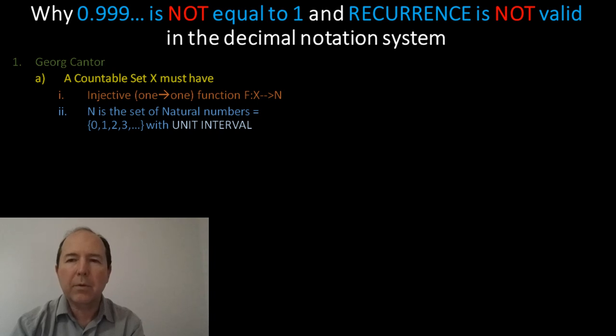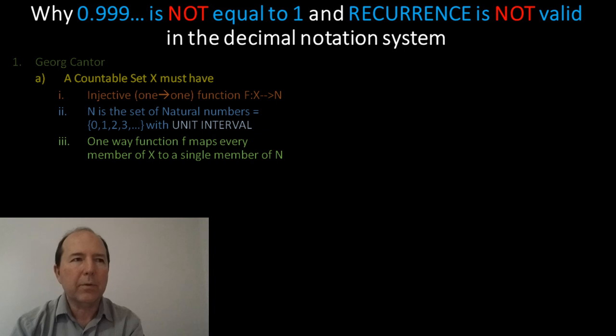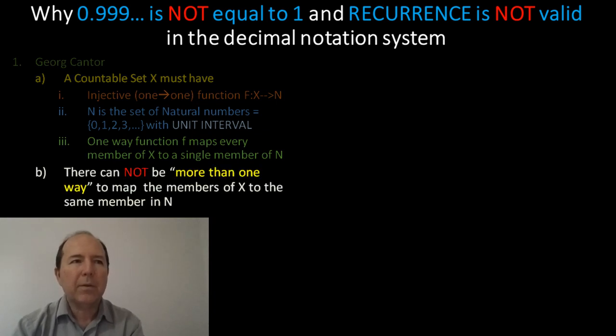And of course, that value of the unit interval is 1, in the case of the set of natural numbers. But a countable set simply needs to have some way of mapping the members of its set into the set of natural numbers. And this must be done with a one-way function, such that there cannot be more than one way to represent any number in X in N.